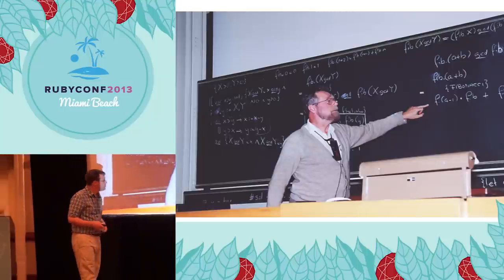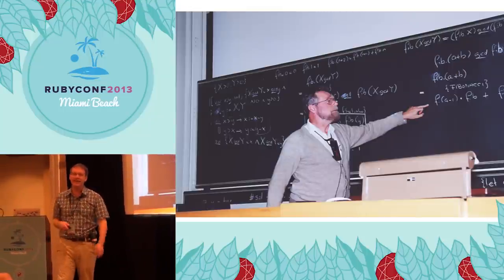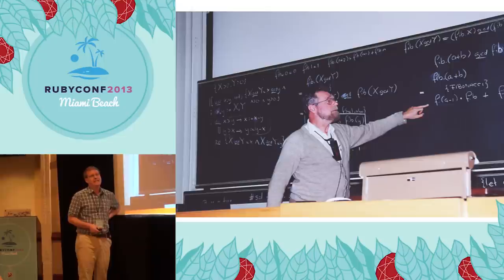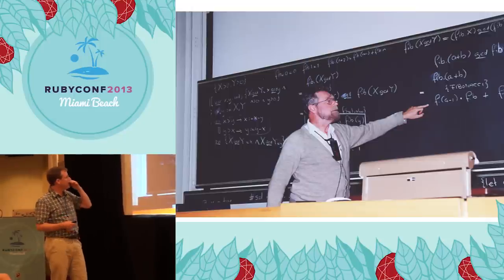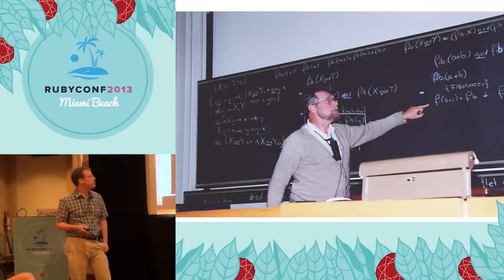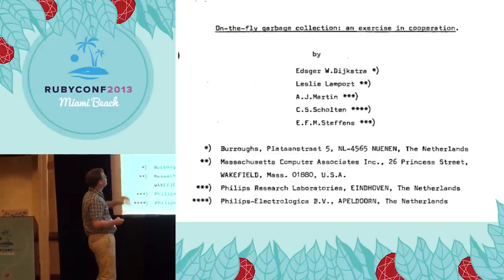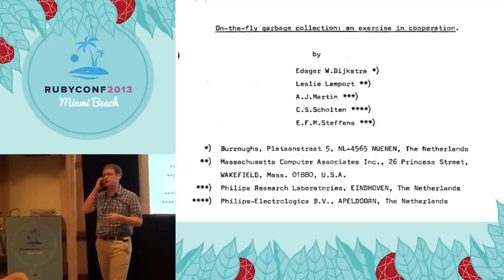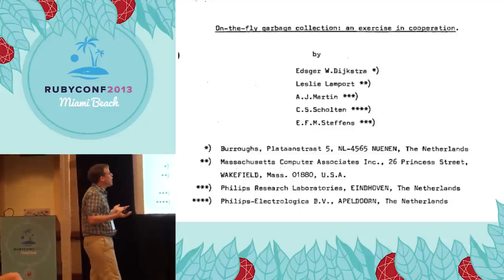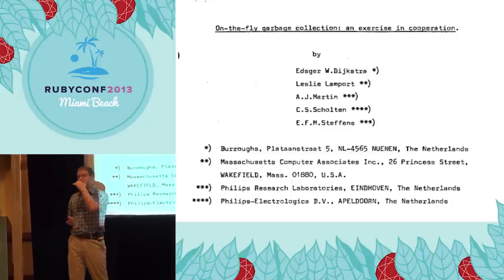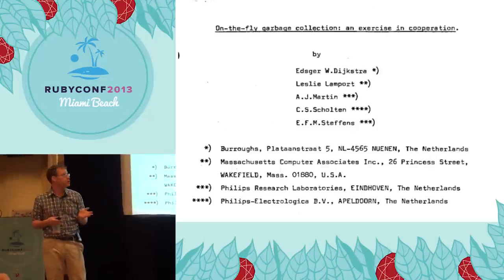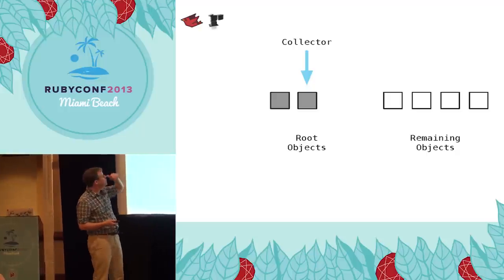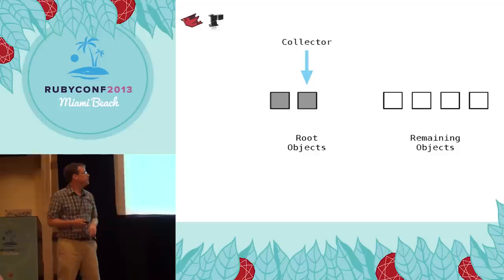So we go back to computer science theory, to the 1960s again. Edgar Dijkstra invented an idea called tricolor marking. He wrote a paper called 'On the Fly Garbage Collection: An Exercise in Cooperation' — 'on the fly' meaning doing GC while your application runs, and 'cooperation' meaning cooperation between the garbage collector and the running application. JRuby and Rubinius use this tricolor marking.